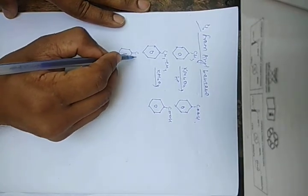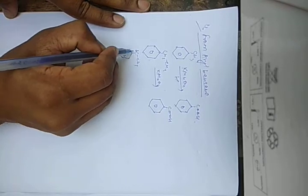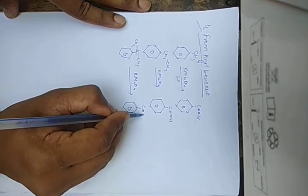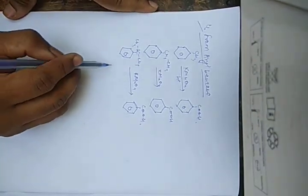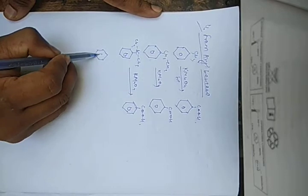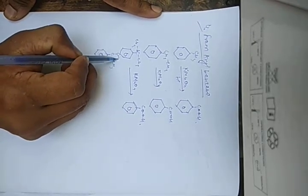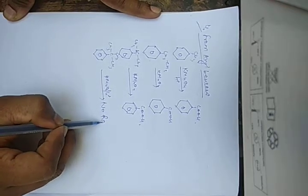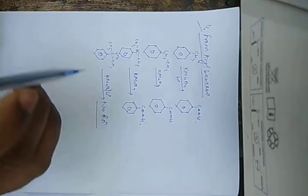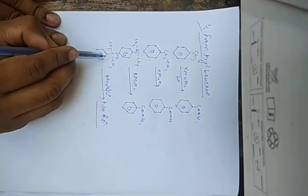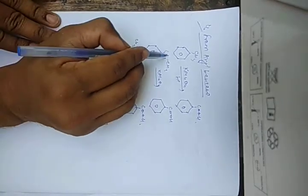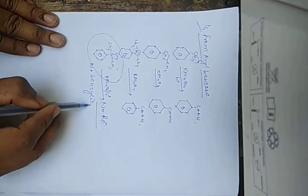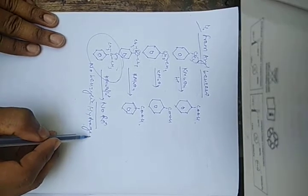Now try to concentrate on this fourth reaction. Suppose this is your substrate — C with three CH3 groups. If you add KMnO4 in acidic medium, here you will have no reaction. The point is that you should have benzylic hydrogen while doing any oxidation. This substrate has no benzylic hydrogen. Benzylic hydrogen is present in the toluene and ethylbenzene examples, but here there is no benzylic hydrogen. Due to the absence of benzylic hydrogen, this reaction will not proceed.